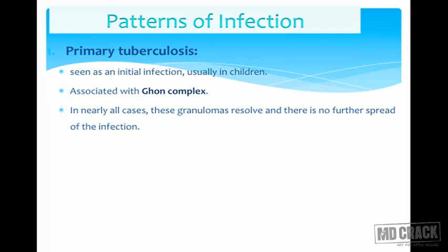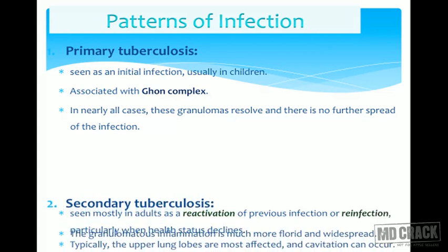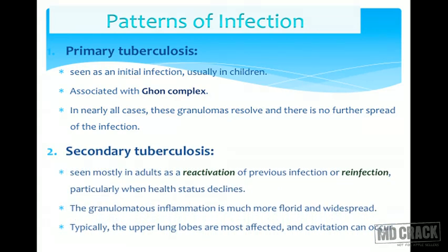Tubercular infection is classified into two entities: primary tuberculosis and secondary tuberculosis. Primary tuberculosis is very common in children — it is the initial site of infection, and we call it the Ghon complex. Especially the hilar group of lymph nodes commonly shows this Ghon complex. In most cases, these granulomas will resolve on their own with no further spread of disease, depending on the individual's immune response.